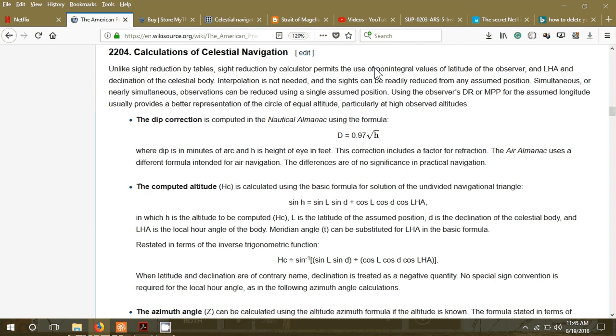l is the latitude of the assumed position, d is the declination of the celestial body, and lha is the local hour angle of the body. Meridian angle t can be substituted for lha in the basic formula restated in terms of the inverse trigonometric function.